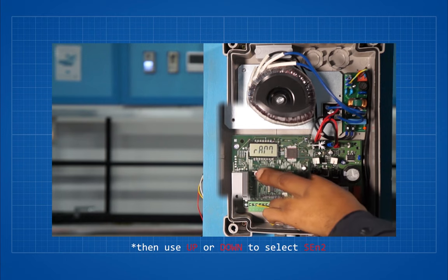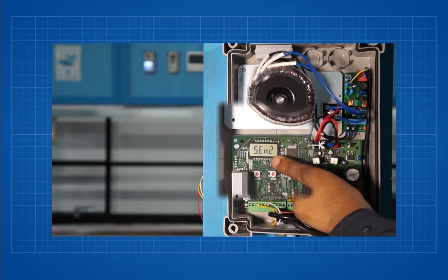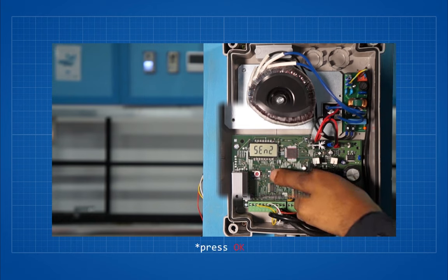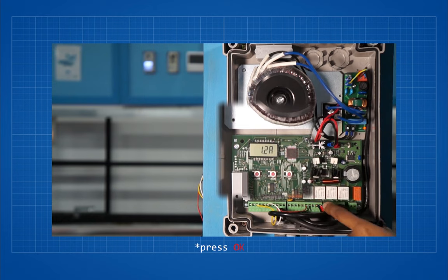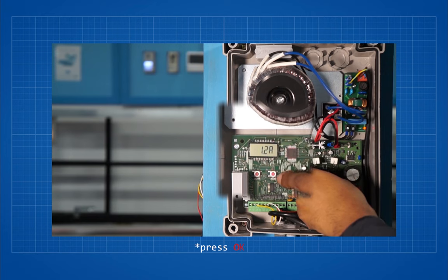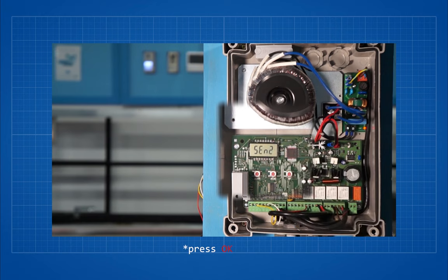Then use the up or down button and select sen2. Increase the sen2 value by 0.2 amps as well, then press ok to save the sensitivity and it should display sen2.